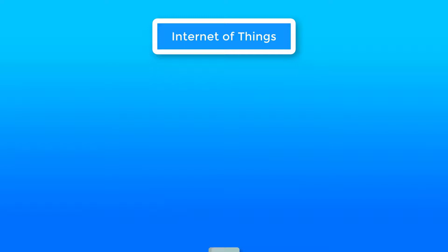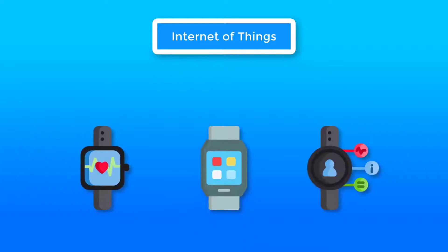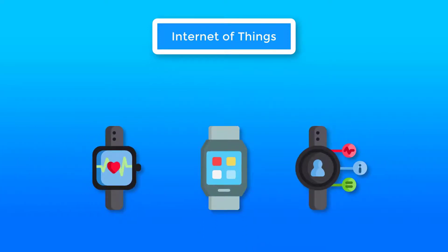Then comes wearables, which are highly demanded all over the world. Sensors and software on wearable devices collect data about the user and help the user to track activity. It can be for fitness or health. Tech giants are really interested in these things and are building amazing devices. And who knows, maybe you are wearing one of these and you don't even know it is IoT based.